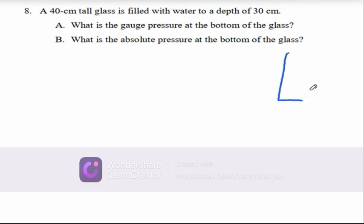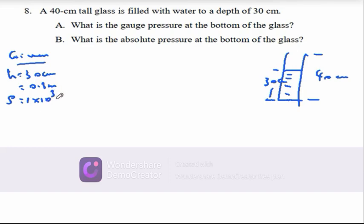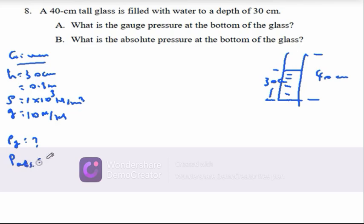Here, let us draw the glass. The glass height is 40 centimeters. The water is filled to 30 centimeters — that is 0.3 meter. Let us take out the given: depth of the liquid is 30 centimeters, which is 0.3 meter. Density is 1×10³ kg/m³. Gravitational acceleration is 10 N/kg. Required: gauge pressure and absolute pressure.